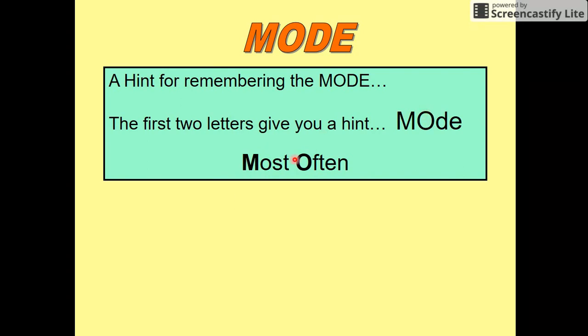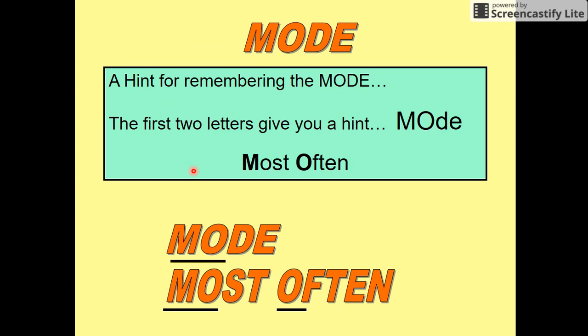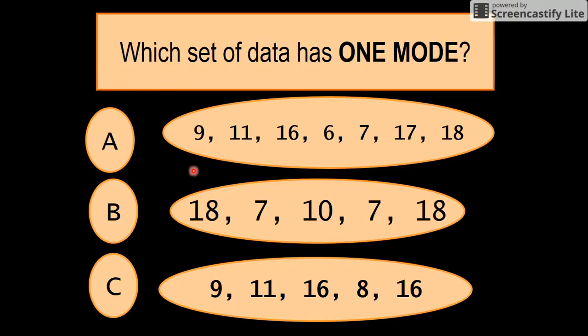Let's have a look: which set of data has one mode? You've got 9, 11, 16, 6, 7, 17, 18—nothing's been repeated here. You've got 18, 7, 10, 7, 18—here's a mode there. Then we've got 9, 11, 16, 8, 16. This one's got two modes because there's two 18s. This one's only got one mode, so I would say C. Yes, it is.